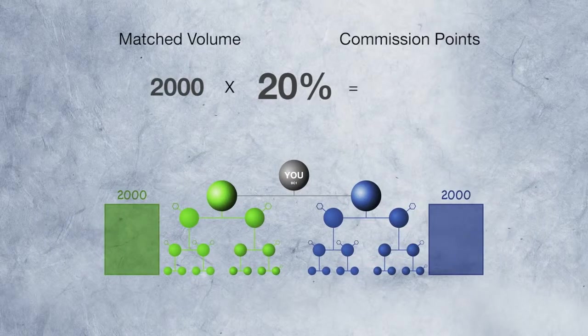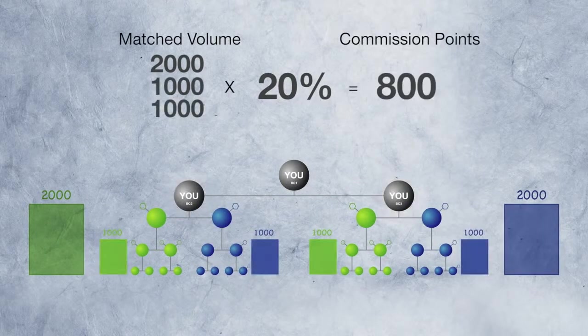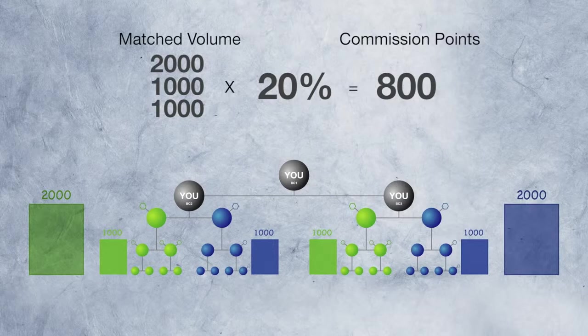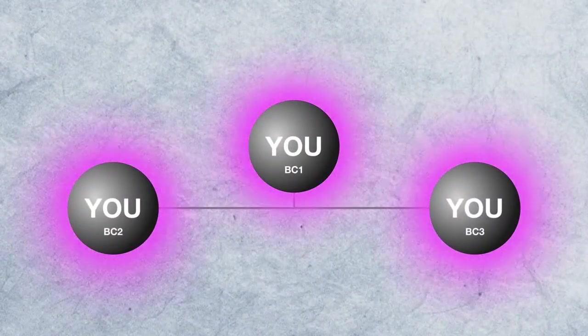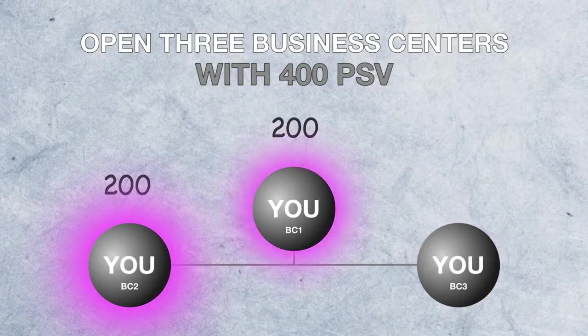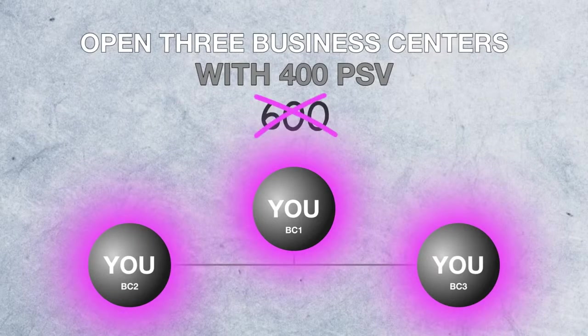If you only had one business center and the same sales volume, you would only earn 400 commission points. With three business centers, you're earning twice as much. Remember, we're talking double the commission with the same sales volume in your organization. This huge increase in income potential is why the most successful people in USANA start out with three business centers. As a new associate, you can open three business centers with 400 sales volume points. Normally, each business center requires 200 points to open, which means that you're opening three business centers with the sales volume required for two.